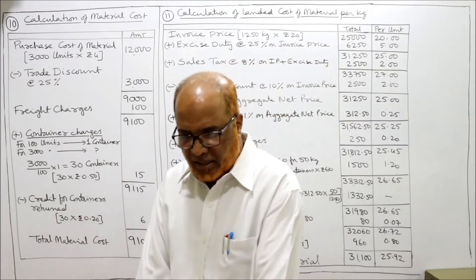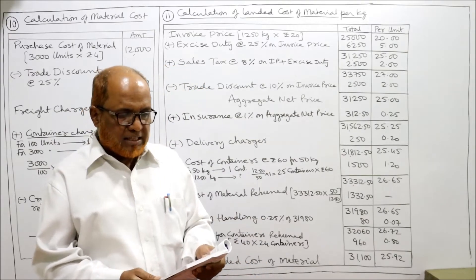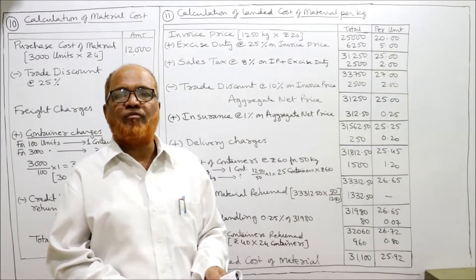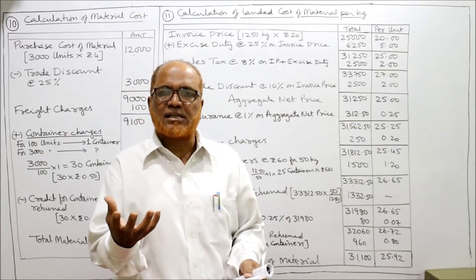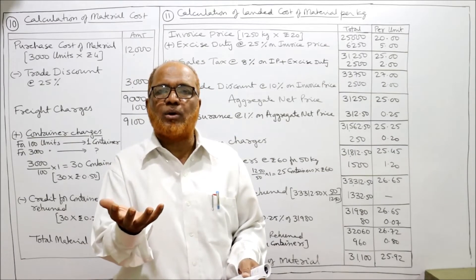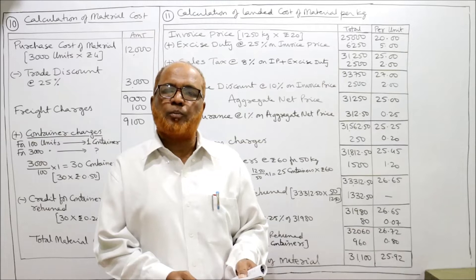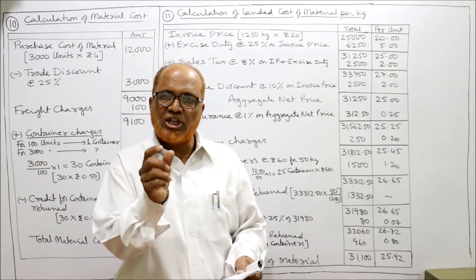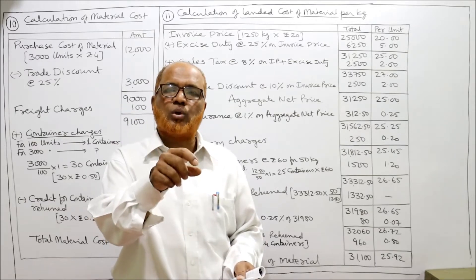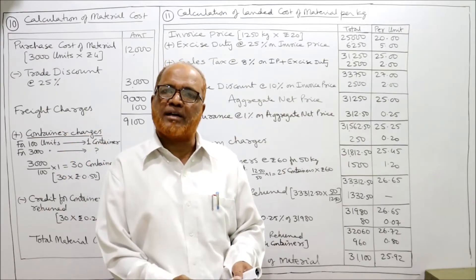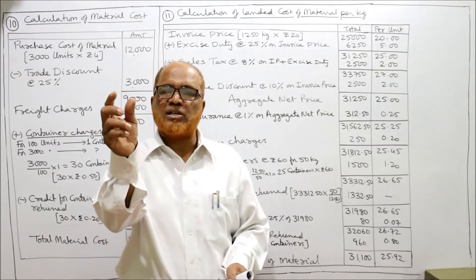Now I am explaining Problem Number 11. The following details are available in respect of a consignment of 1250 kilograms of Material X. We are purchasing Material X with a total quantity of 1250 kg. Invoice price is 20 rupees per kilogram, so 1250 × 20 gives the total invoice price. Excise duty is 25% on invoice price.